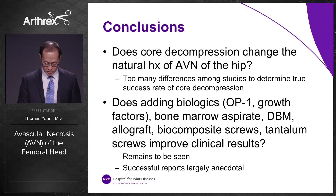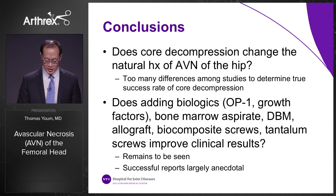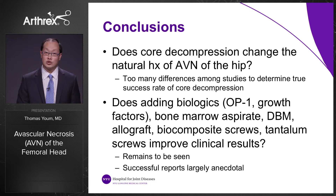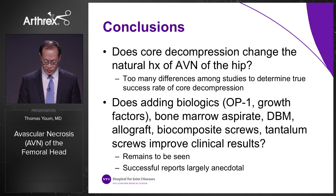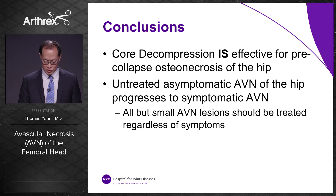In conclusion, does core decompression change the natural history of AVN of the hip? There are too many differences among studies to determine the true success rate. Does adding biologics — OP-1 growth factors, bone marrow aspirate, etc. — improve clinical results? It remains to be seen, however there is a trend for success in both clinical and laboratory tests for cartilage and bone healing. Core decompression is effective for pre-collapse osteonecrosis, and untreated asymptomatic AVN can progress to symptomatic disease, so all but the smallest AVN lesions should be treated regardless of symptoms.